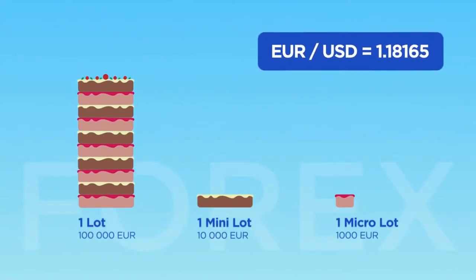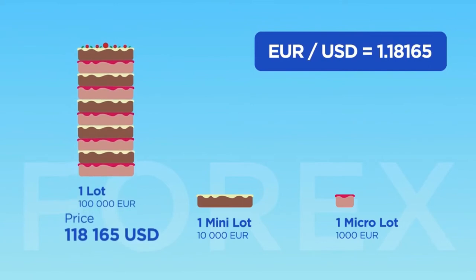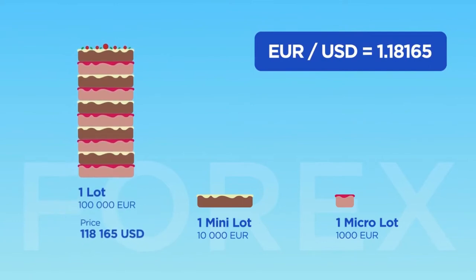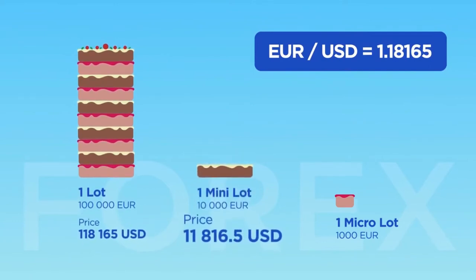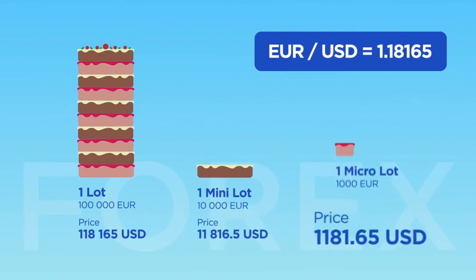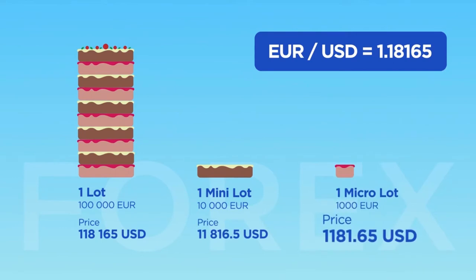For example, if EURUSD quotes 1.18165, a lot costs 118,165 US dollars, a mini lot costs 11,816.50 US dollars, and a micro lot costs 1,181.65 US dollars.